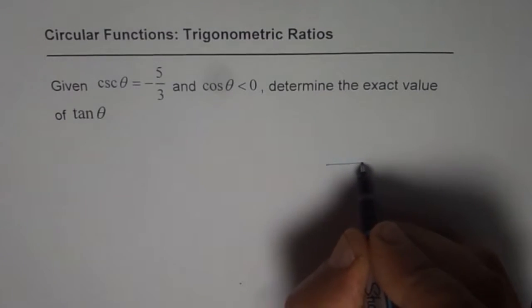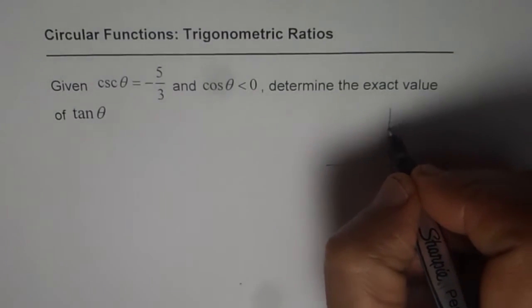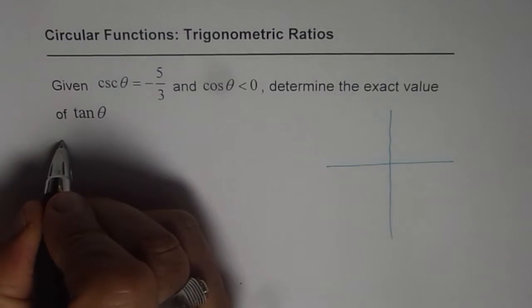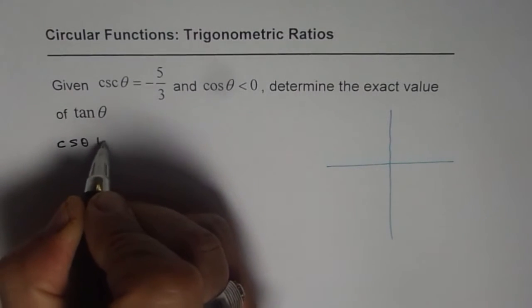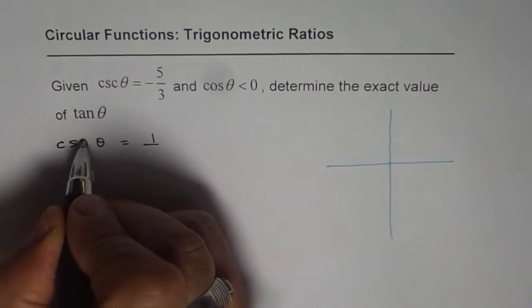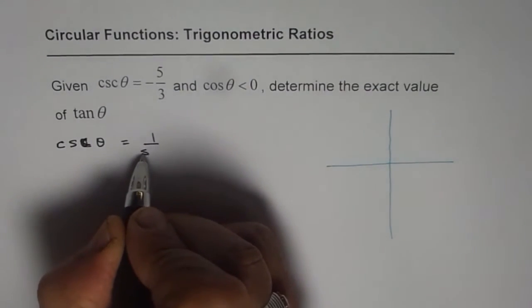Let's first try to understand the question itself. When we say cosecant theta is minus 5 over 3, it really means what? Now we know cosecant theta is actually equals to 1 over sin theta.